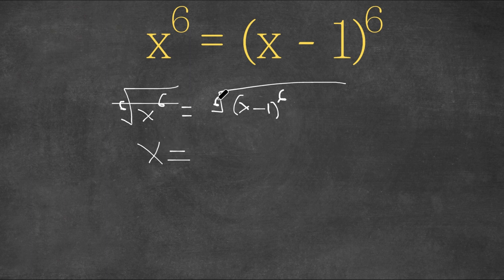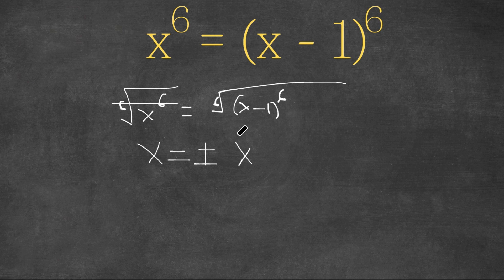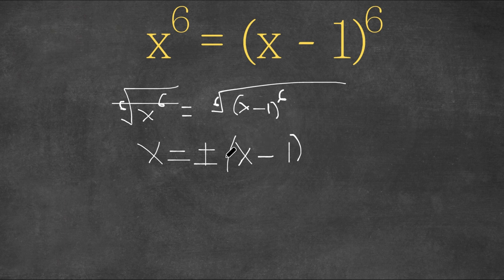...these two cancel out as well, so we're left with plus or minus. Remember, we get plus or minus x minus 1. So now this gives us two equations: x equals positive x minus 1, or x equals negative x minus 1.